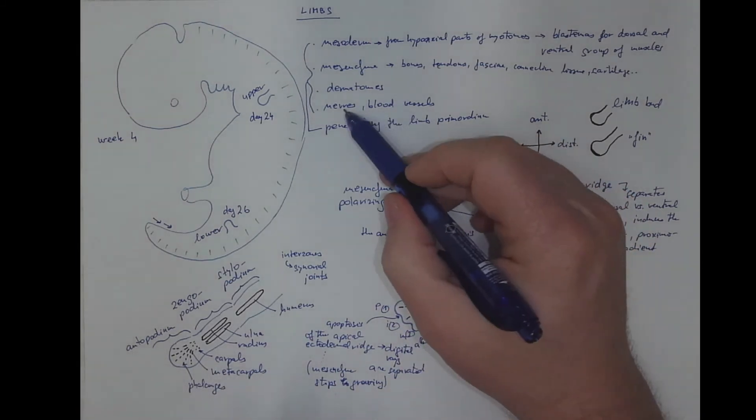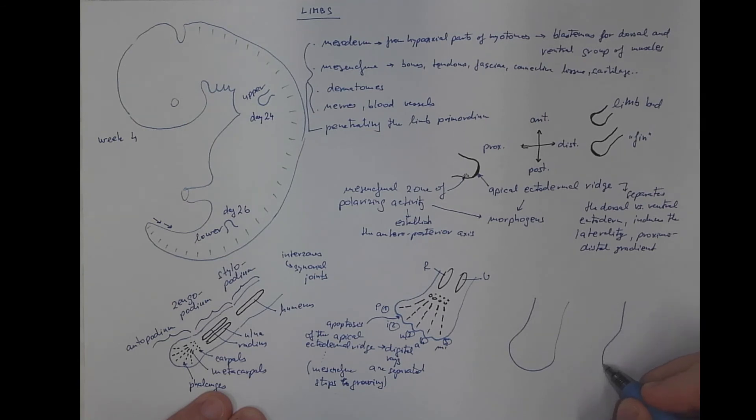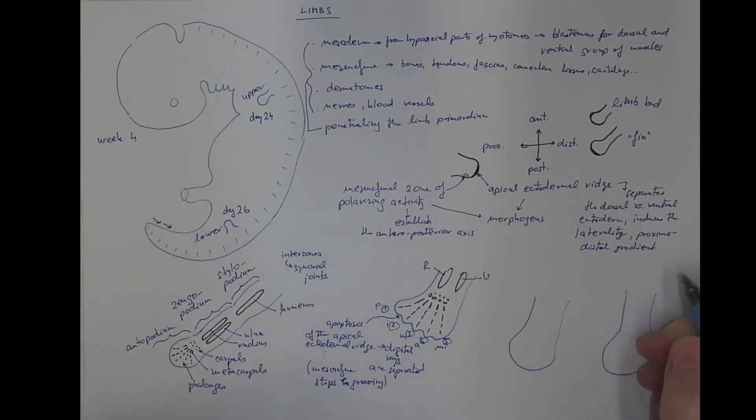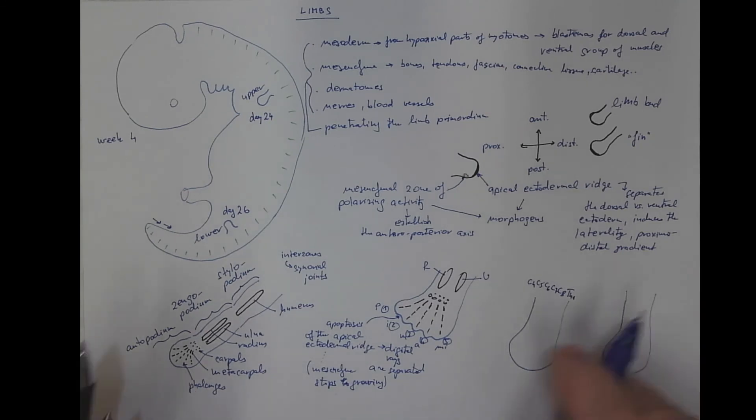Considering the nerves that are supplying the upper and the lower limb, the upper limb will receive nerves from the C4, C5, C6, C7, C8 segments and the first thoracic spinal cord segments. These are the nerves that contribute to the innervation of the upper limb. Here is the radial side, here is the ulnar.